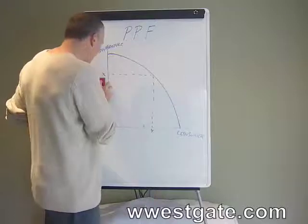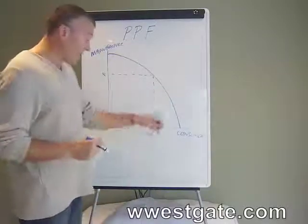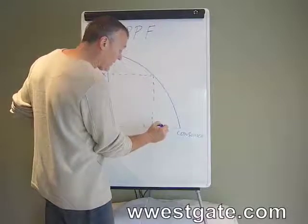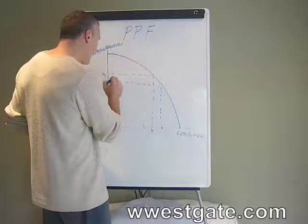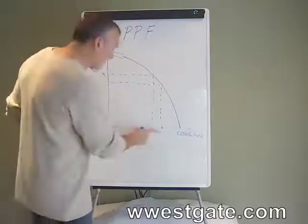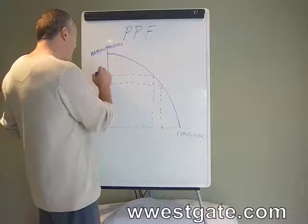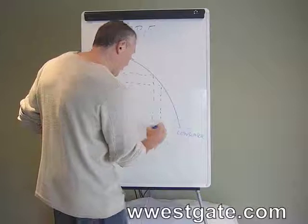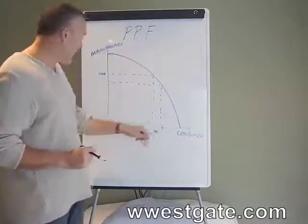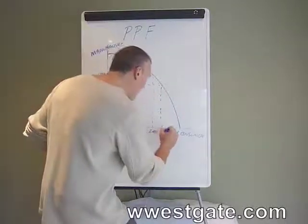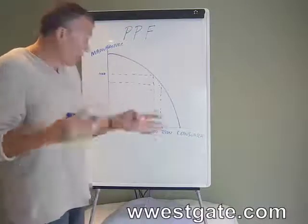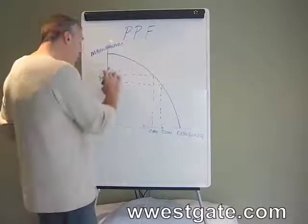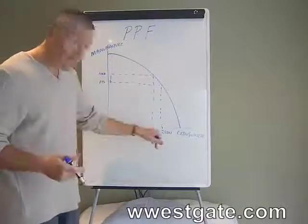So in this case, if the economy decides collectively that it wants to increase its amount of consumer goods — let's say it wants to operate at this level — what does it have to give up in order to get that? Let's put some numbers on this. Let's say you were operating at a stage where you're producing 1,000 machinery goods and 2,000 consumer goods. Now we want to increase output to 2,500 consumer goods. What is that going to cost? We see that in order to get 500 more consumer goods, we've had to give up 200 machinery goods. The opportunity cost for 500 more is 200.